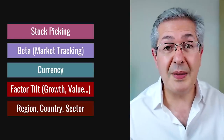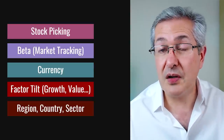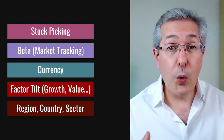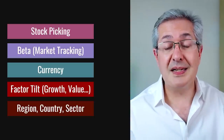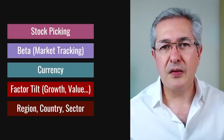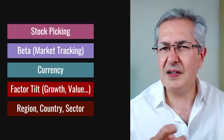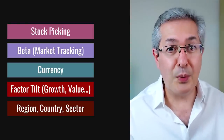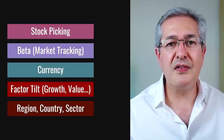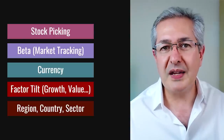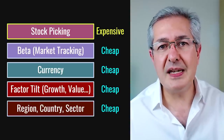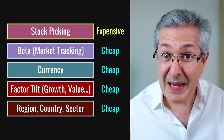Another choice of the fund manager is to tilt towards a particular region — for example developed markets versus emerging markets, or Asia versus Europe — or a particular country like the United States or Japan, or a particular sector like tech. By looking at the tilts of an active fund you can start to think about reproducing its returns with a portfolio with similar tilts. The key point is that of all these different drivers of fund return, the most expensive is stock picking ability. We're willing to pay active managers very high fees to beat the market, and yet many of them fail to do so.